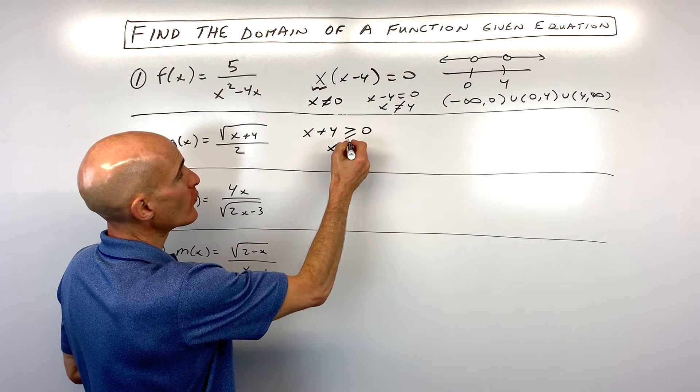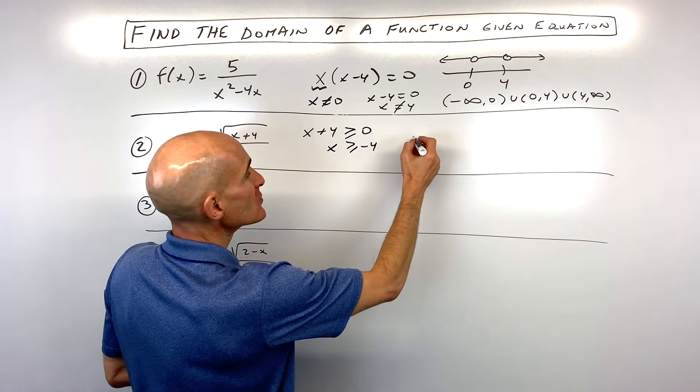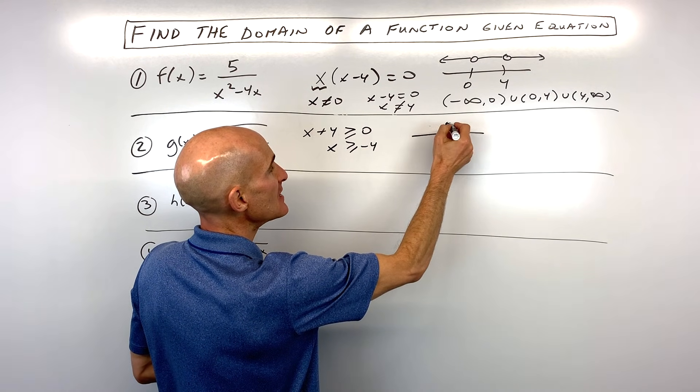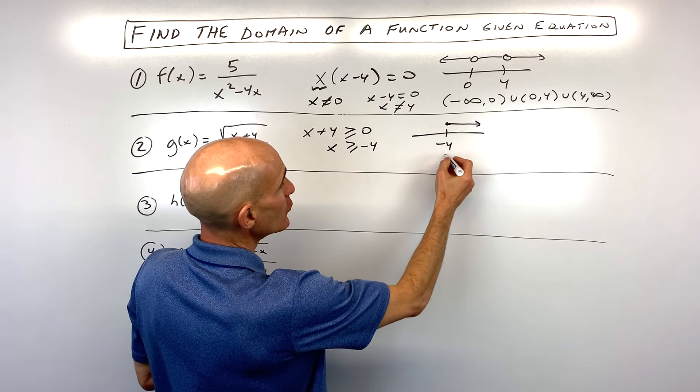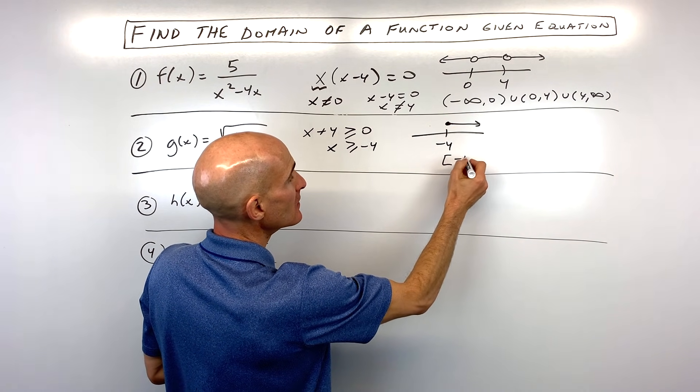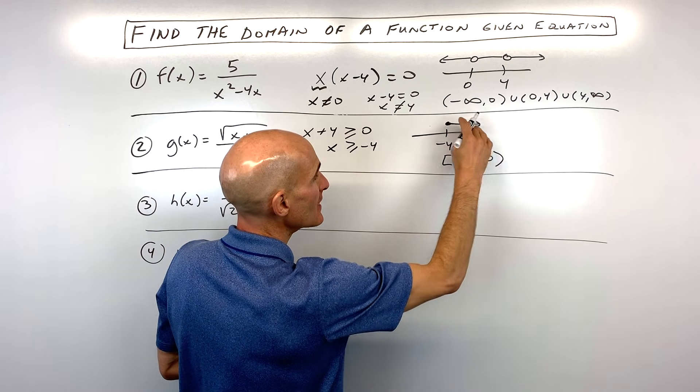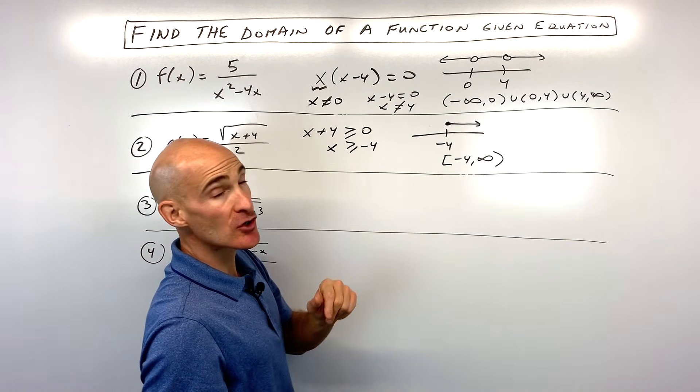So now if I subtract four from both sides, we see that x has to be greater than or equal to negative four. So let's go to our number line again. Here's negative four. It's equal to negative four or greater. So when we write this in interval notation, notice that it includes negative four. So I'm using the bracket all the way to infinity. We can never reach infinity. That's an open. That's a parentheses. So that's our domain for number two.